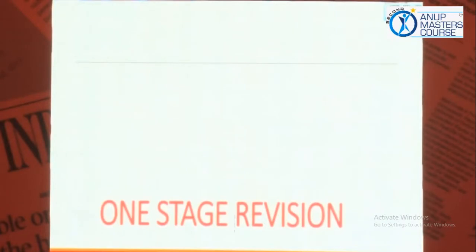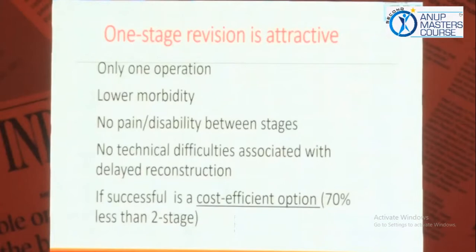The second important option is single-stage revision. This has been traditionally dealt with and explained by the endo-clinic people. It basically involves only one operation, and it has a lower morbidity. There is no pain or disability between two stages, because you are doing two in one. There are no technical difficulties associated with delayed reconstructions, and obviously if it is successful, it is definitely cost-effective.